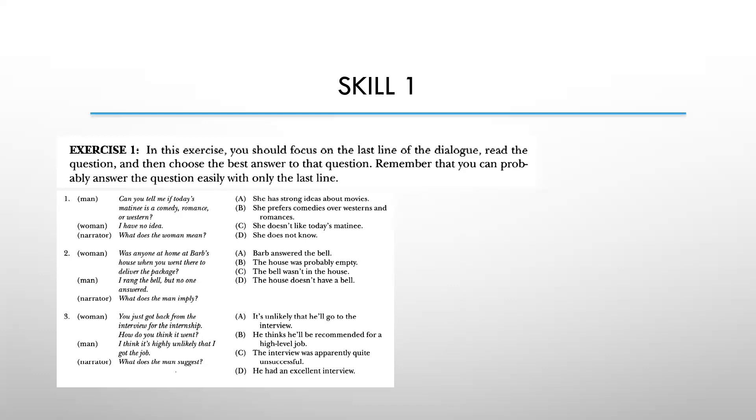Yang nomor 2: 'Was anyone at home at Barb's house when you went there to deliver the package?' Kemudian kata si laki-lakinya 'I rang the bell but no one answered.' Maksud dari I rang the bell but no one answered itu yang mana jawabannya? Yaitu 'The house was probably empty.' Jadi jawabannya adalah mungkin rumahnya kosong ya, karena ketika dia memencit bell itu tidak ada yang menjawab. Nah kalau yang pilihan yang A 'Barb answered the bell,' berarti kebalikannya, itu wrong answer. Kalau yang C 'The bell wasn't in the house,' artinya gak ada bell, itu wrong answer. Kalau yang D 'The house doesn't have a bell,' juga sama artinya tidak ada bell disana, itu wrong answer. Jadi pilihan yang tepatnya adalah yang B, 'The house was probably empty.'